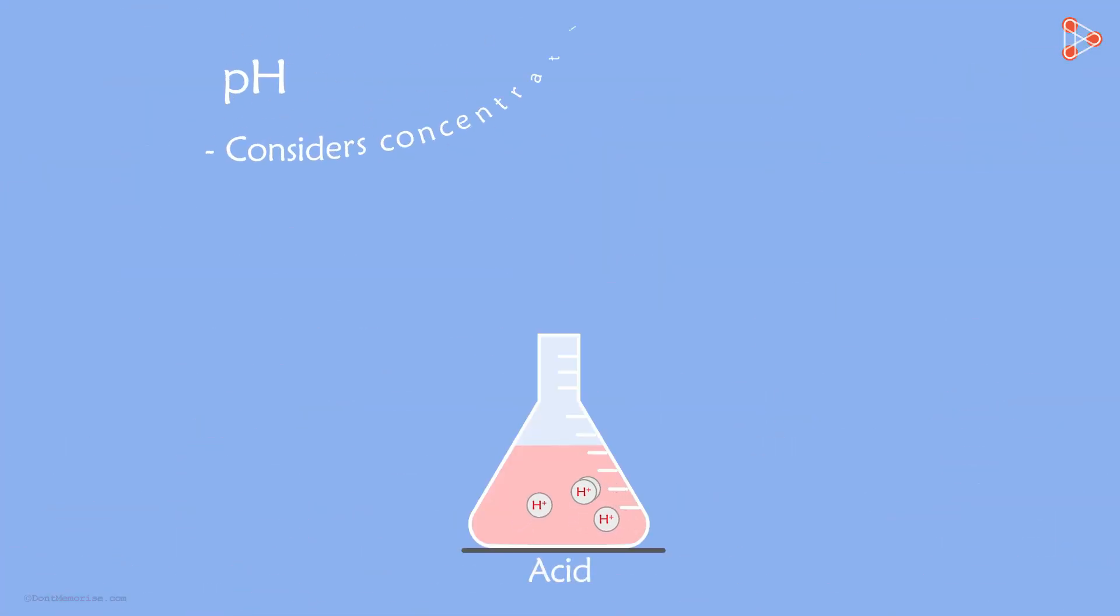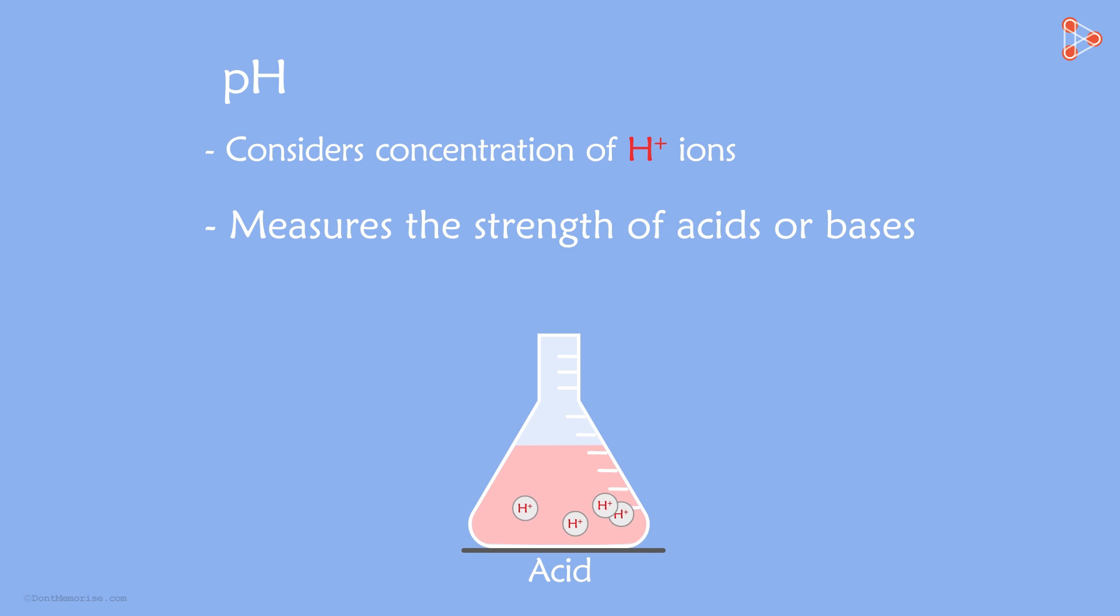How does it do that? The pH takes into account the concentration of H plus ions in the solution. Yes, the pH measures the strength of acids and bases. But you'd probably be thinking that if pH only considers the concentration of H plus ions, how can it tell us how strong a base is?